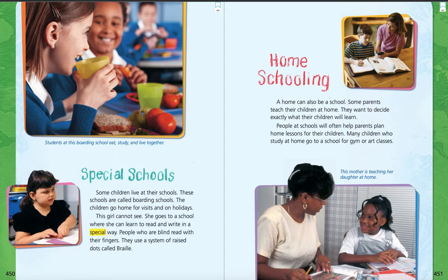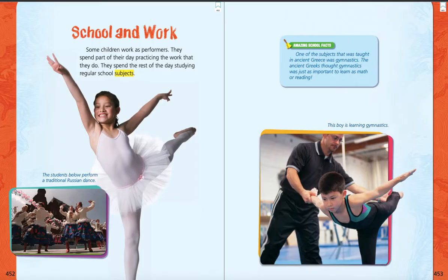Many children who study at home go to a school for gym or art classes. And at the bottom of that page, the caption says, this mother is teaching her daughter at home. School and work: some children work as performers. They spend part of their day practicing the work that they do. They spend the rest of the day studying regular school subjects. And at the bottom, we have a photo with a caption: the students below perform a traditional Russian dance. So some children go to school to learn how to do their performance and to study at the same time.